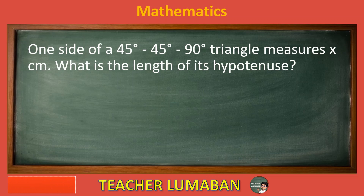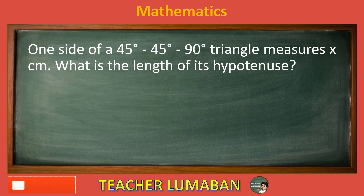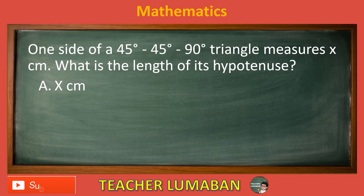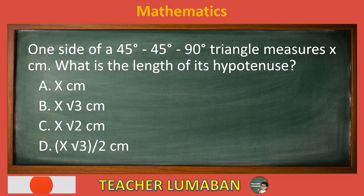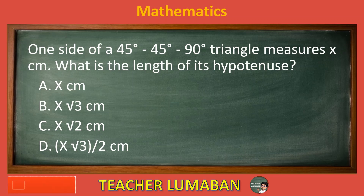One side of a 45-45-90 degree triangle measures X cm. What is the length of its hypotenuse? Letter A: X cm. Letter B: X square root 3 cm. Letter C: X square root 2 cm. Letter D: X square root 3 over 2 cm. Choose the suitable answer based on the given choices in 5 seconds.